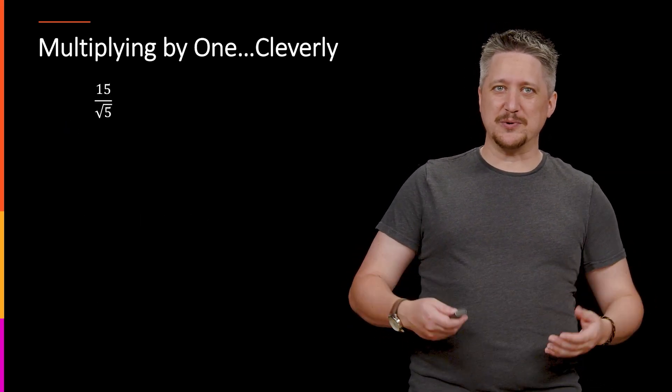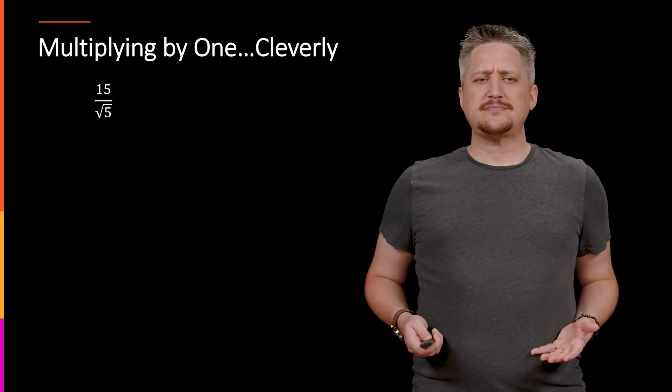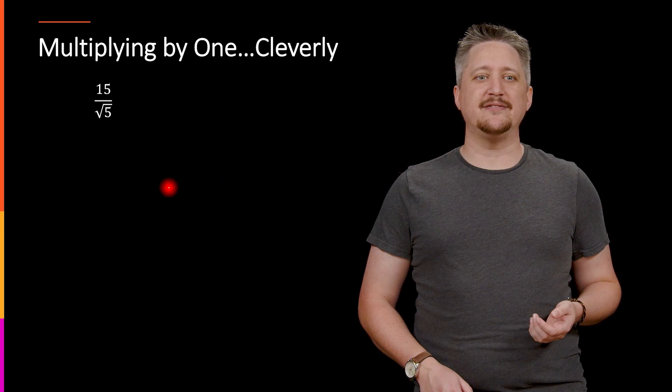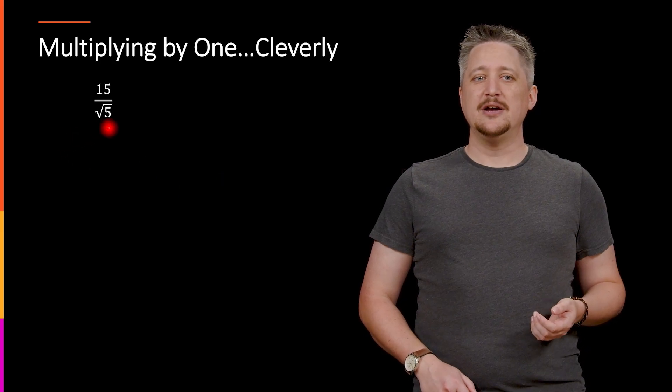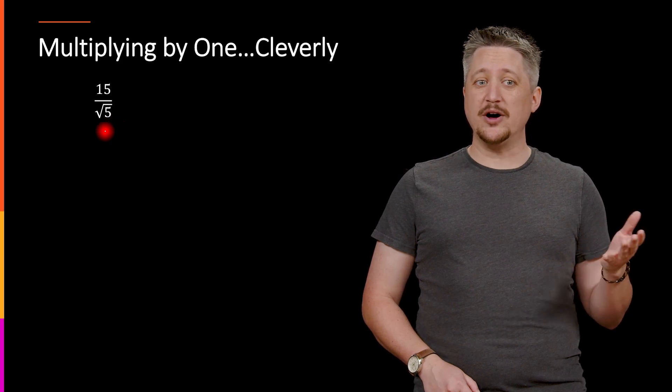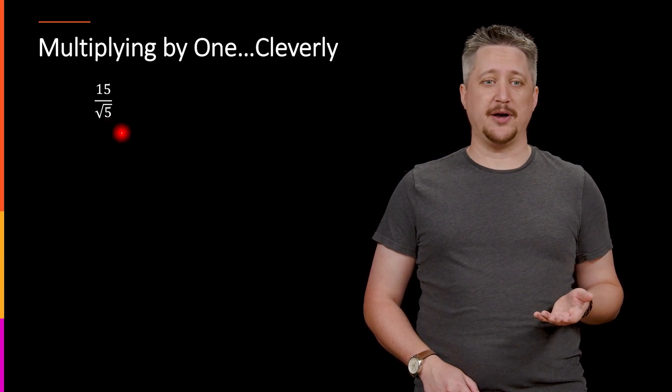So if we have something like 15 over the square root of 5, well, if we want to rationalize the denominator, by which we mean get rid of that root in the bottom, we do that by squaring that bottom piece, meaning that we want to multiply by the square root of 5 on the bottom.